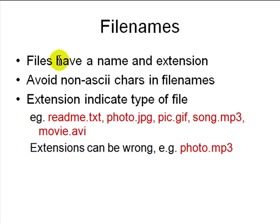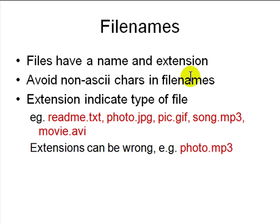File names have a name and an extension — the extension is a dot followed by a few characters. Avoid non-ASCII binary characters and control characters in file names, as they can prevent copying or moving files. Extensions indicate file type: .txt for text, .jpg for photograph, .gif for image, .mp3 for audio, .avi for video. The three-character limit comes from DOS, but longer extensions are allowed today. Never use spaces in file names — it is bad practice for scripting.